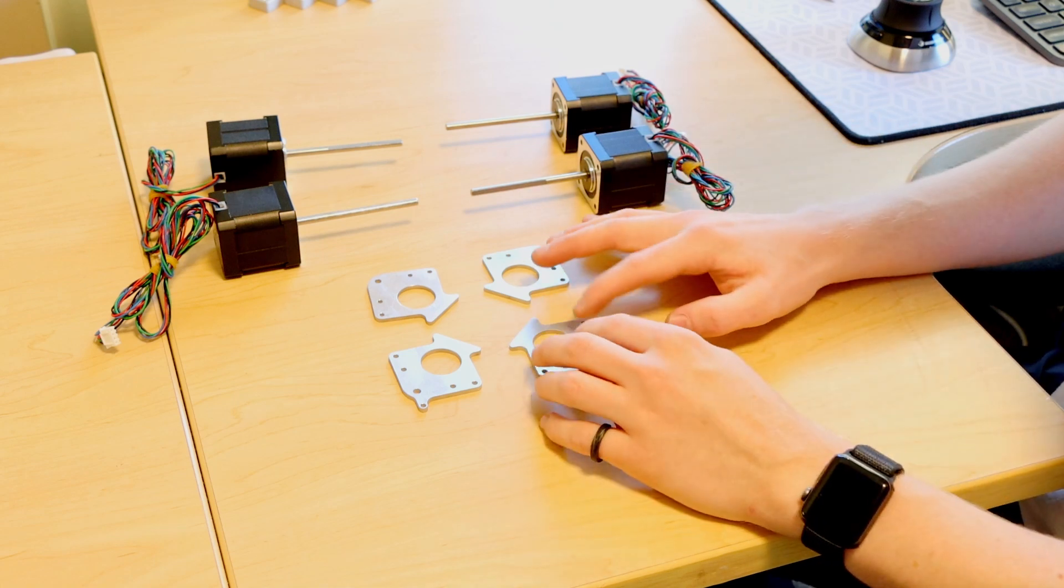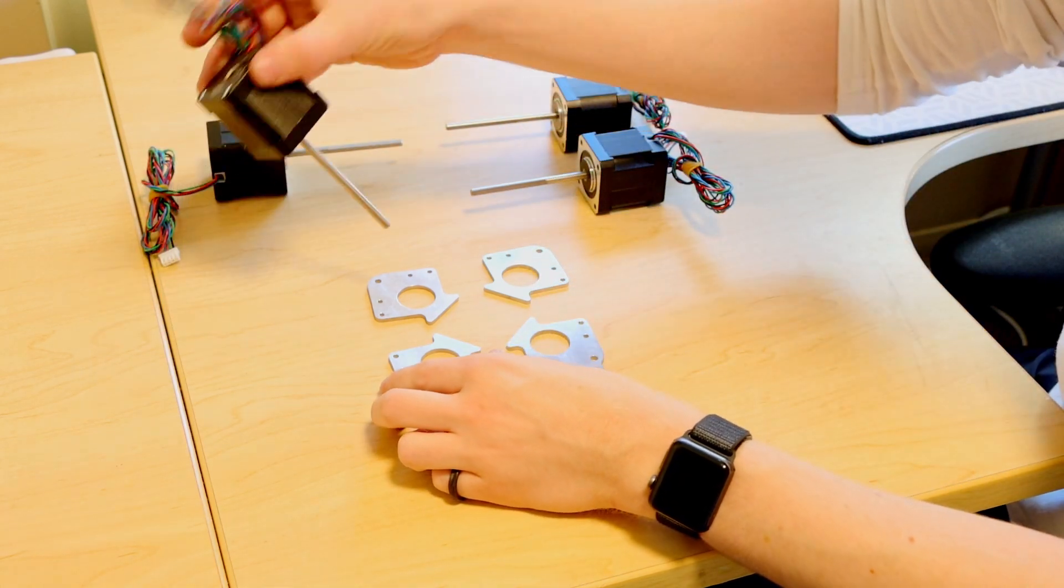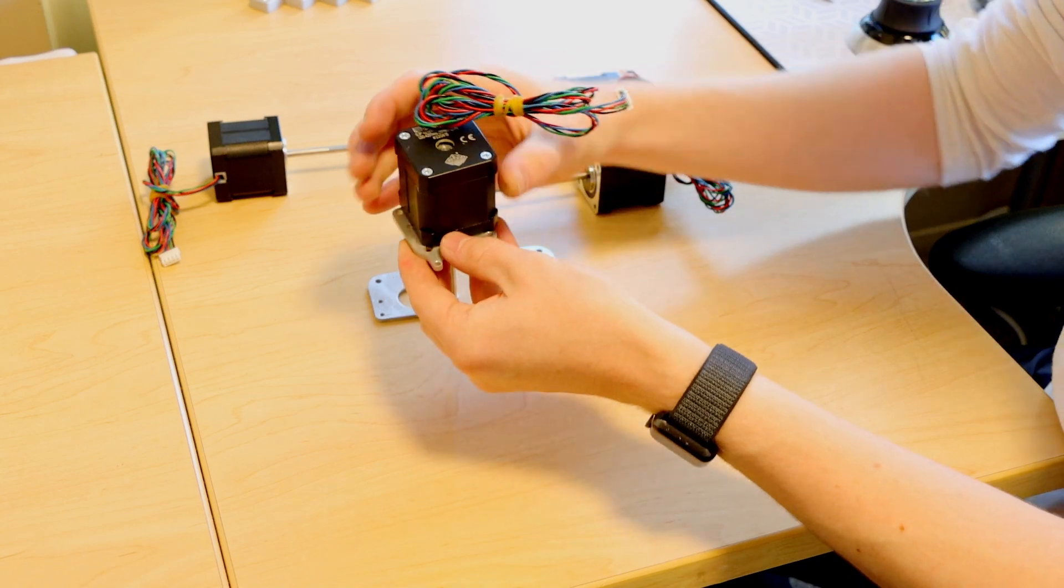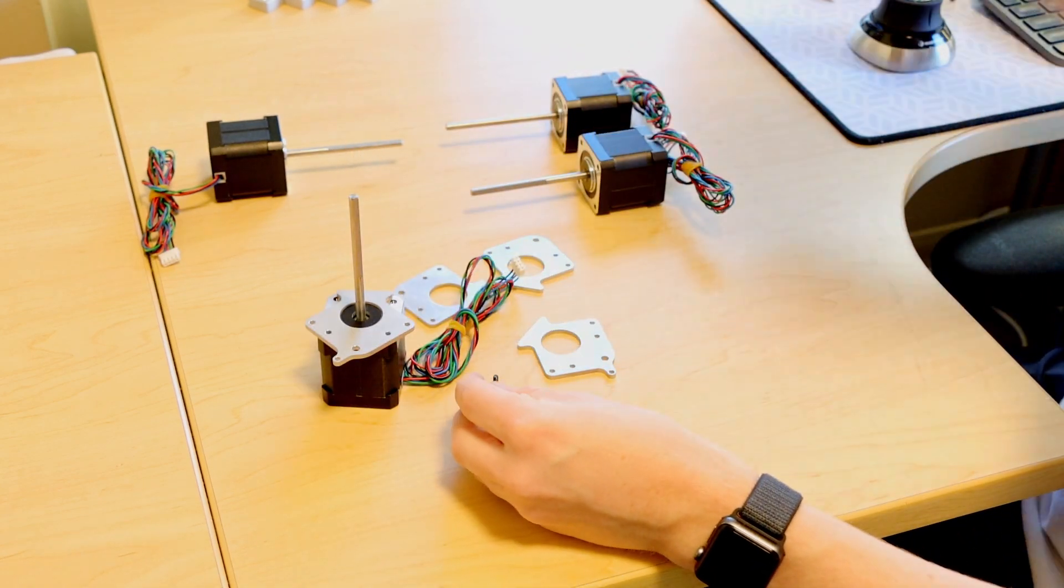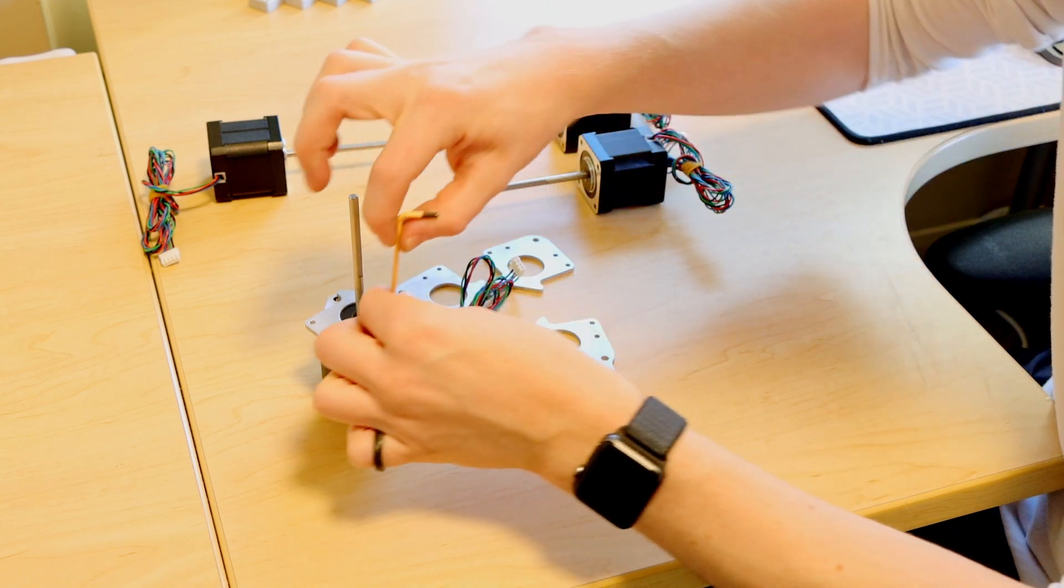So now we're going to mount the motors to these little motor mounting plates. The motors just come in from above. Use some M3 by 6 bolts to fix it to the plate.